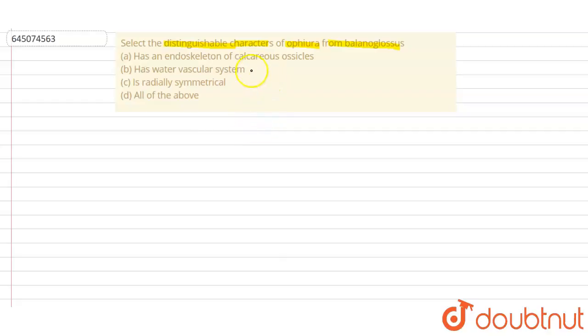So when we talk about the first option that has an endoskeleton of calcareous ossicles, this is a distinguishable character which is present in Ophiura but is actually absent in Balanoglossus. Because Balanoglossus is basically the acorn worm or a soft-bodied worm, it does not have an endoskeleton of calcareous ossicles. So this is a characteristic distinguishable feature which is only found in Ophiura, and the other name for Ophiura is basically brittle star, and it is named brittle star because of its endoskeleton which is made up of calcareous ossicles. So this is a characteristic feature.